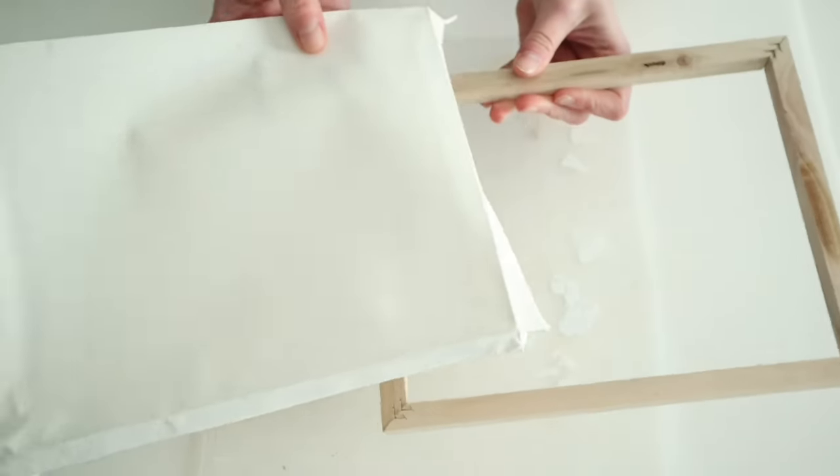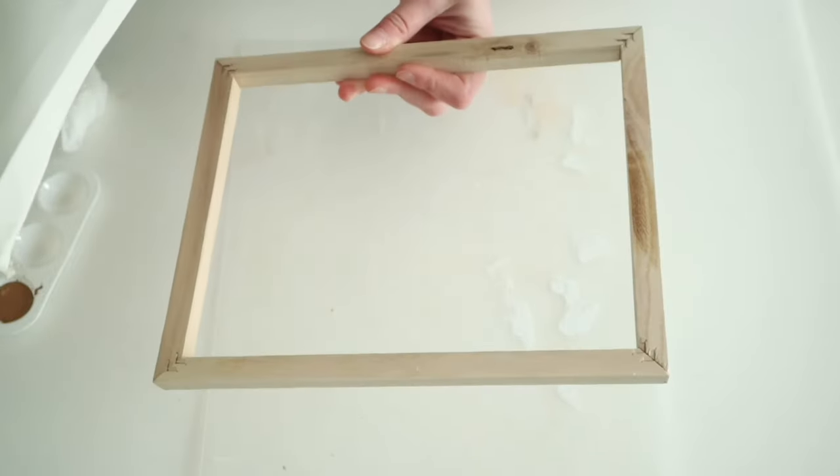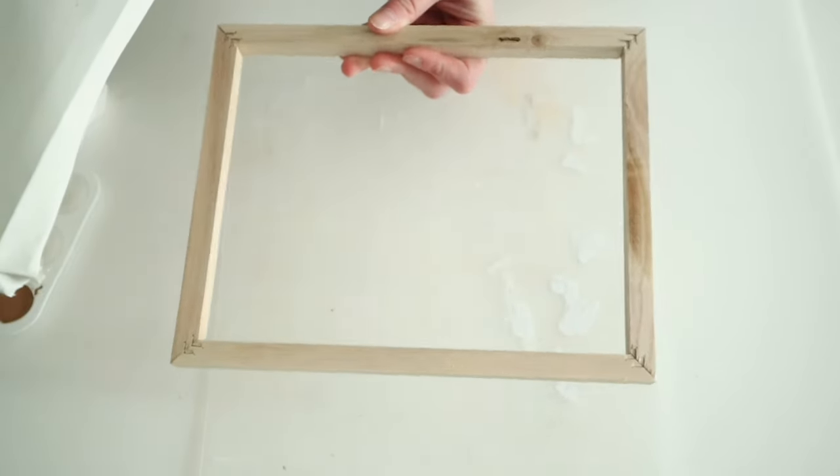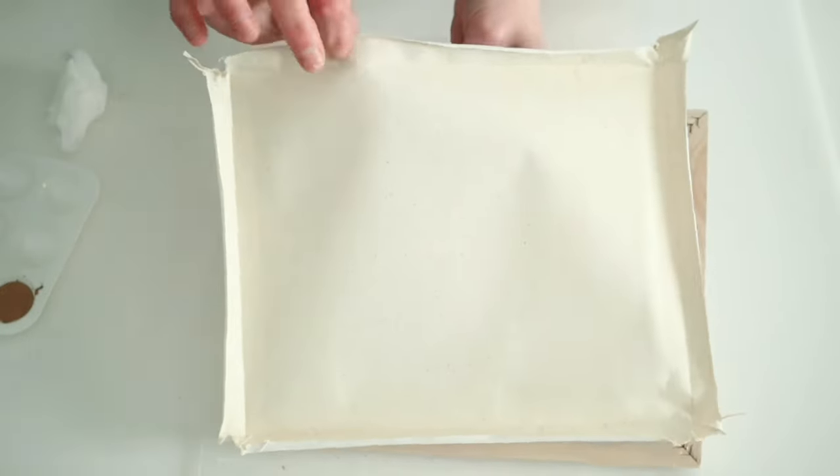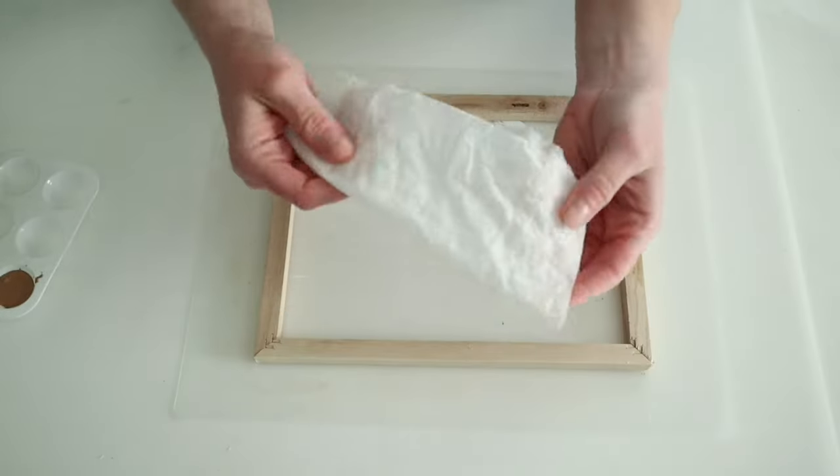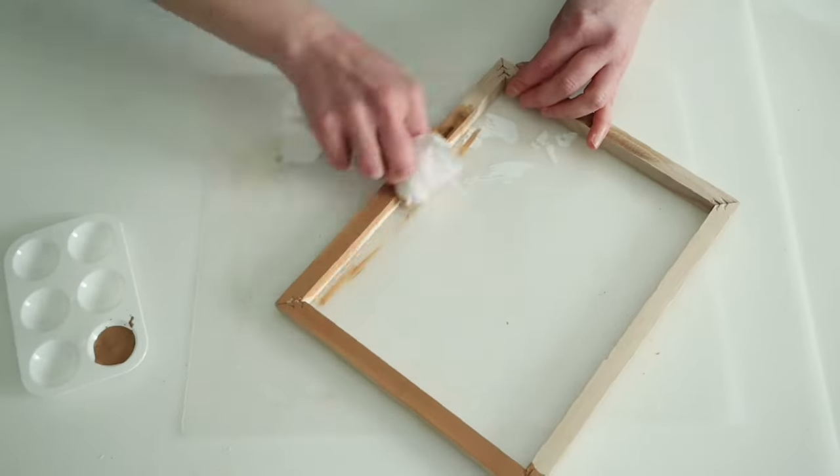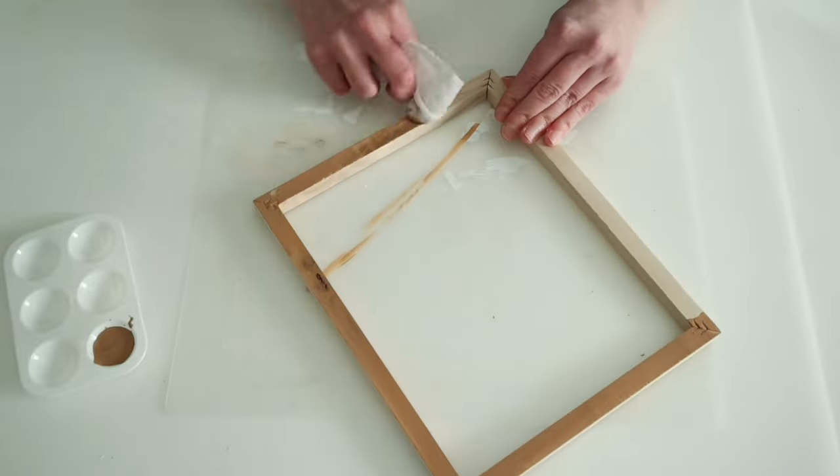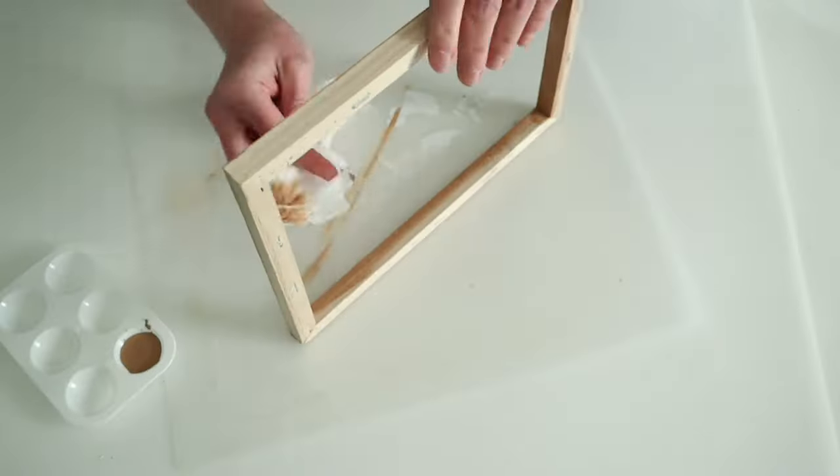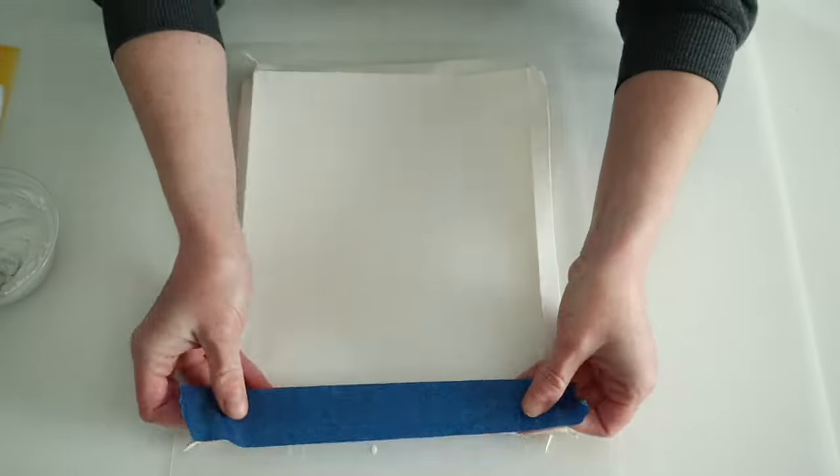For this project, we are just going to be using one of Dollar Tree's canvases, and as you can see, I went ahead and I removed the canvas from the frame first. To stain my frame, I am just going to go ahead and use the baby wipe hack. All you have to do is just take a baby wipe and dip it into some paint, and then just rub that all over the frame to give it a nice stain. Then I'm just going to set that aside while I go ahead and work on the canvas.